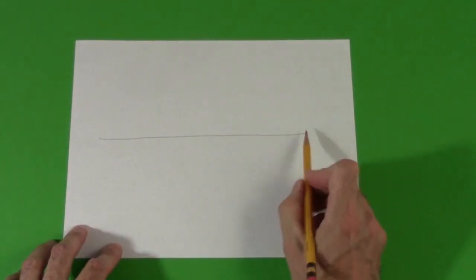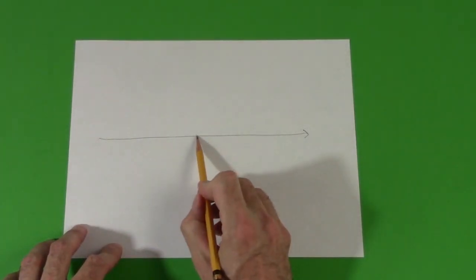Start by thinking of the pitch of a single note. Pitch corresponds to frequency and lies on a scale which is a continuous line. Here, higher pitches are to the right.